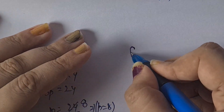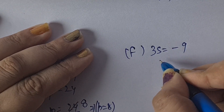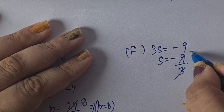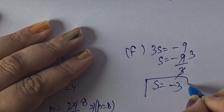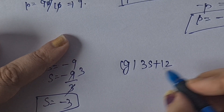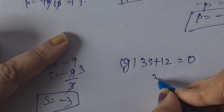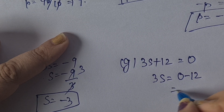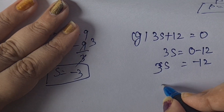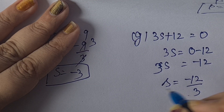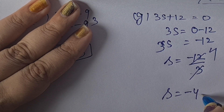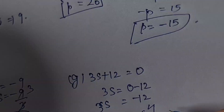F part: 3S = minus 9. So S = minus 9 by 3 = minus 3. G part: 3S + 12 = 0. So 3S = 0 minus 12 = minus 12. S = minus 12 divided by 3 = minus 4.